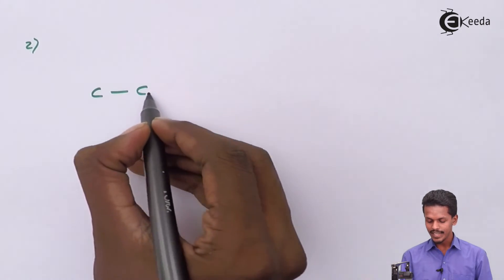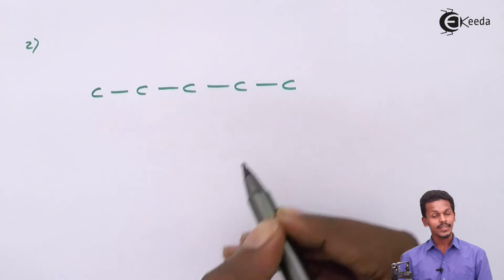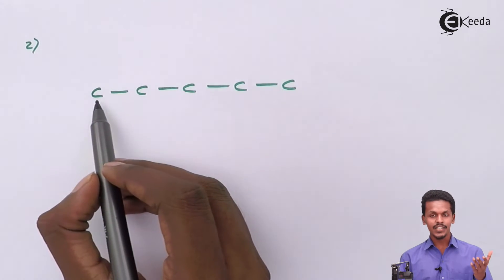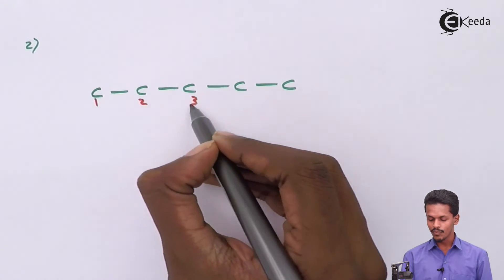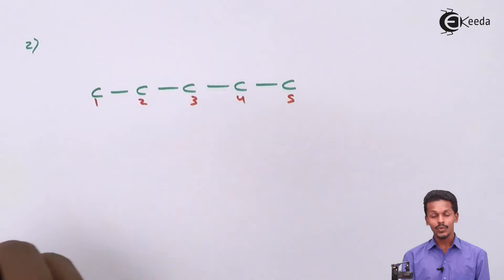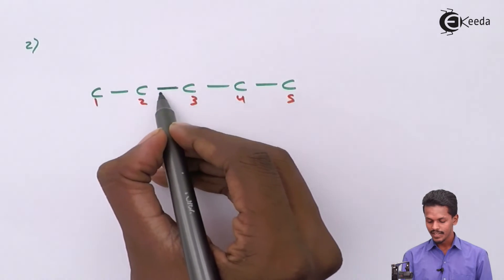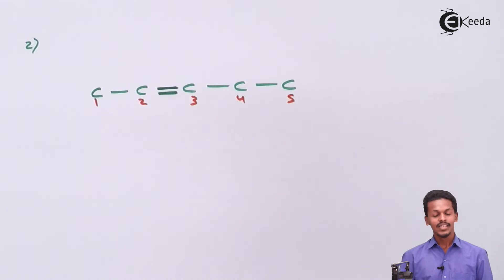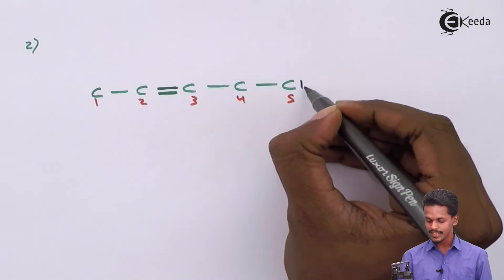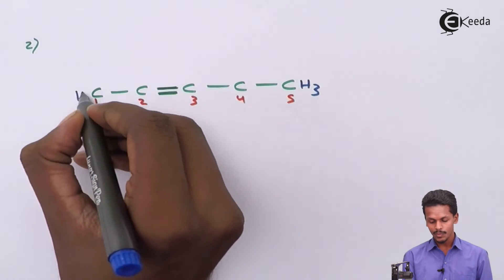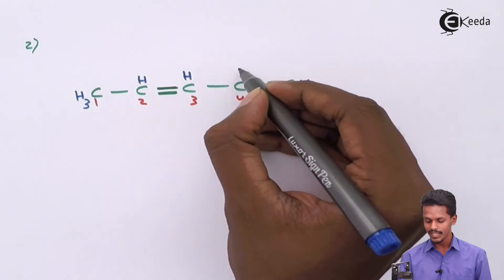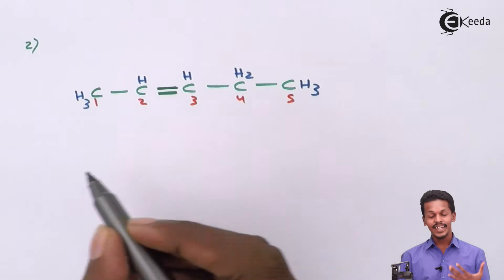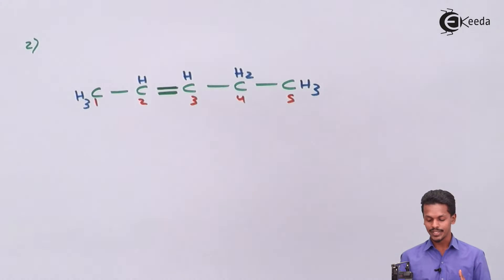This second isomer again has five carbon atoms in a straight chain: one, two, three, four, five. The double bond is between carbon number two and carbon number three. Filling in the hydrogen atoms: CH3, CH3, CH, CH, and CH2, giving a total of ten hydrogen atoms in the molecule.